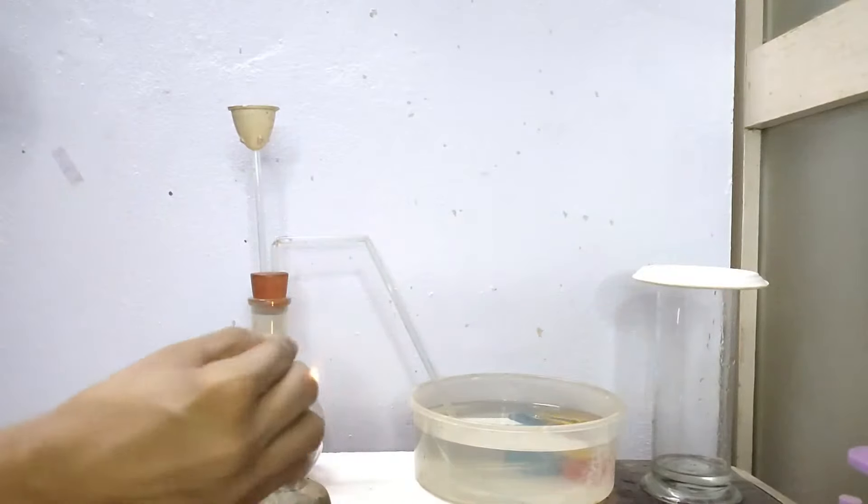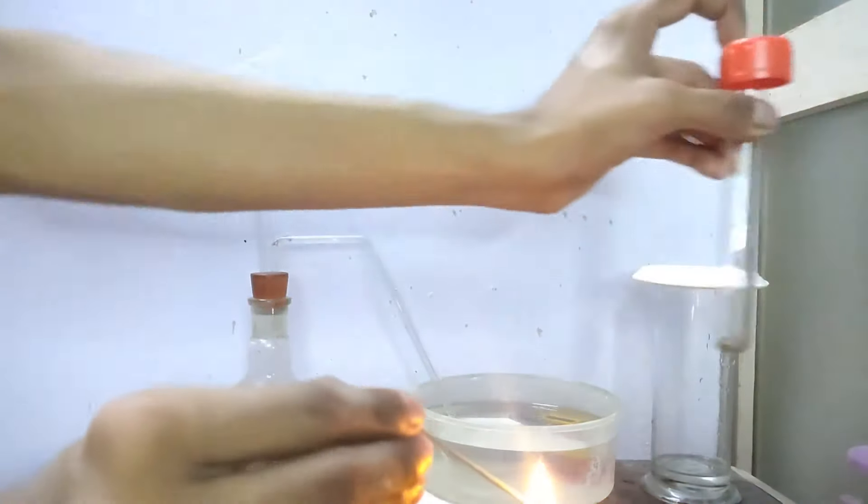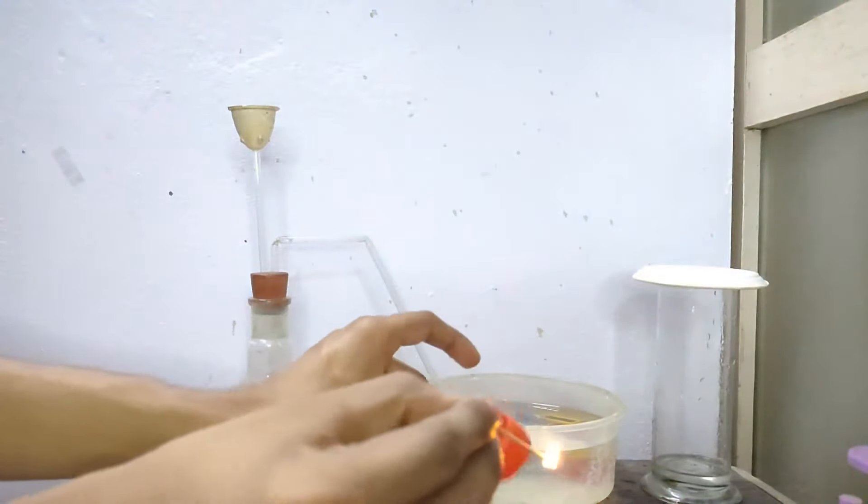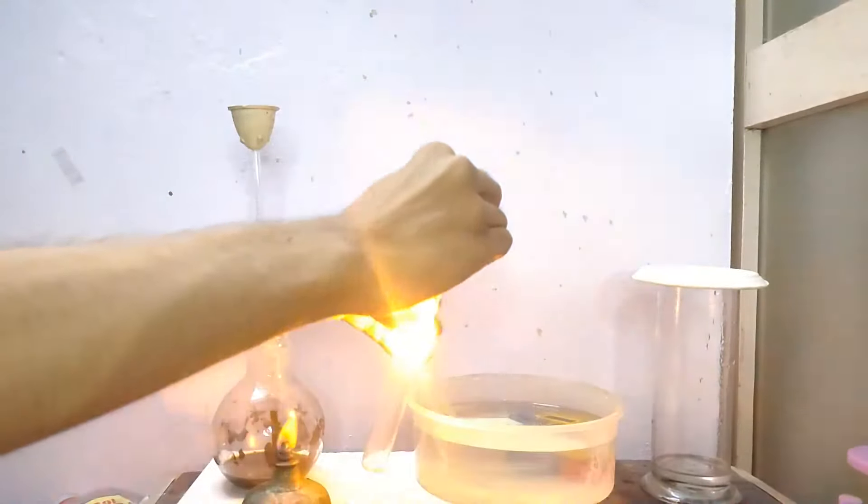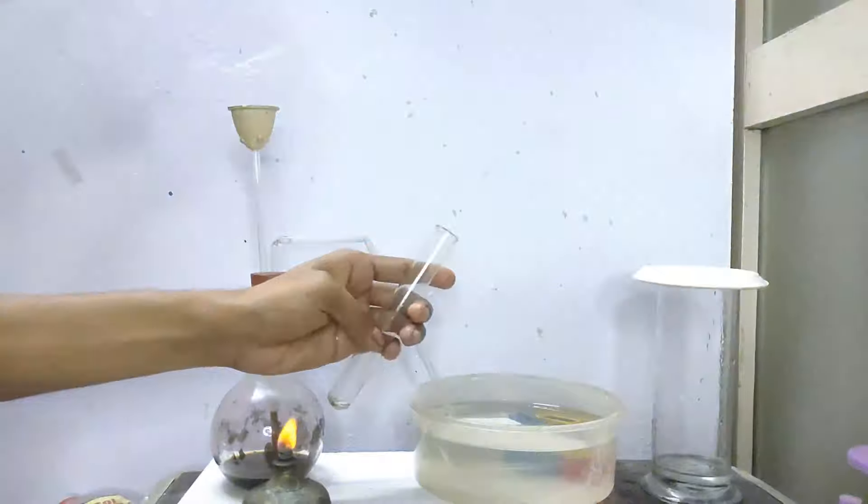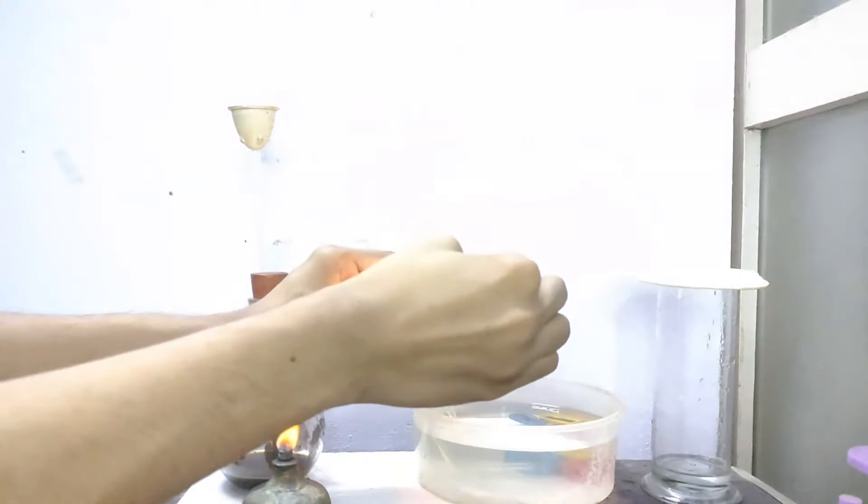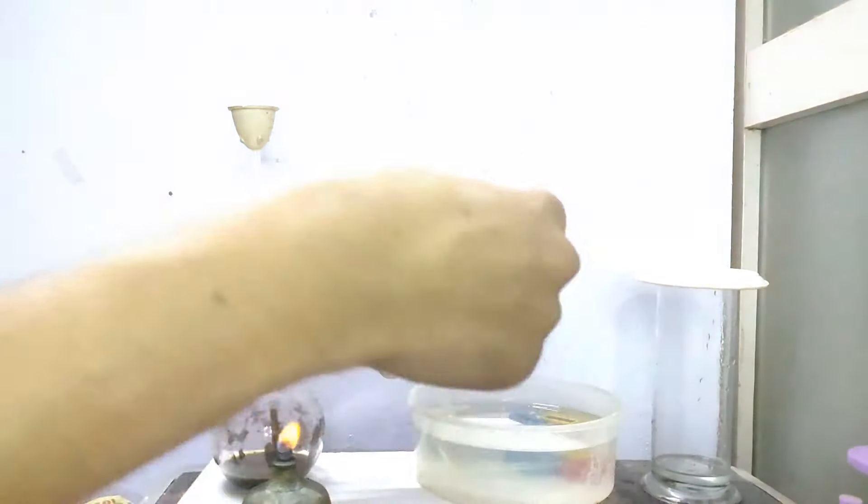Now to show you the test of oxygen, I will take a burning splinter, extinguish it to blow out the flame and insert the glowing splint inside the test tube with oxygen gas. And you can see that it rekindles. This is the test for oxygen.